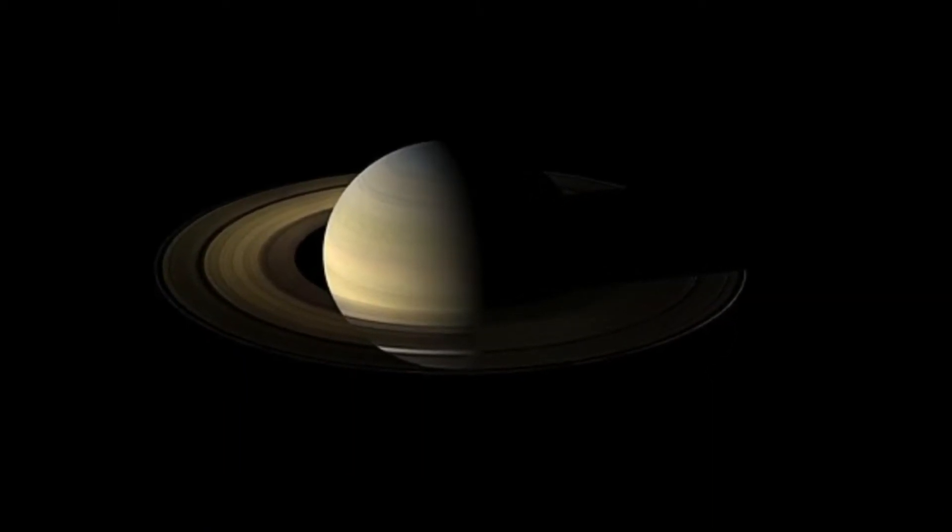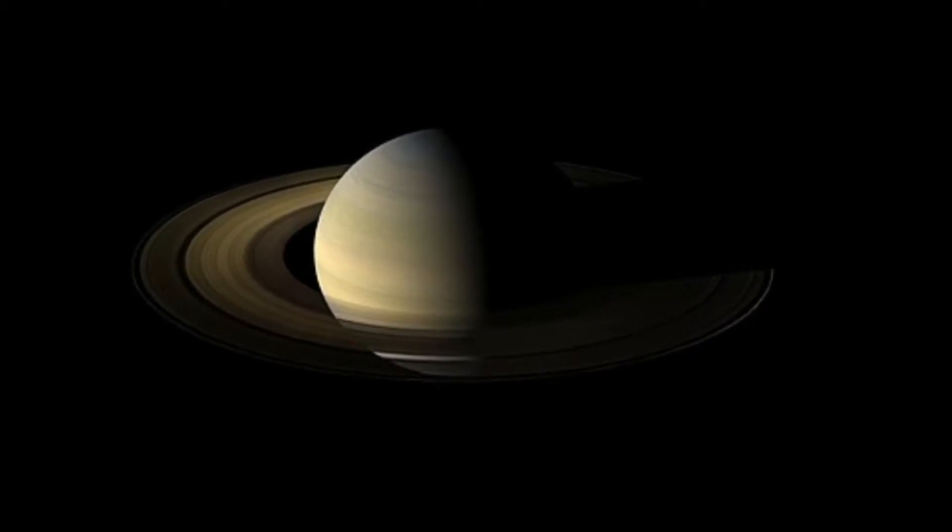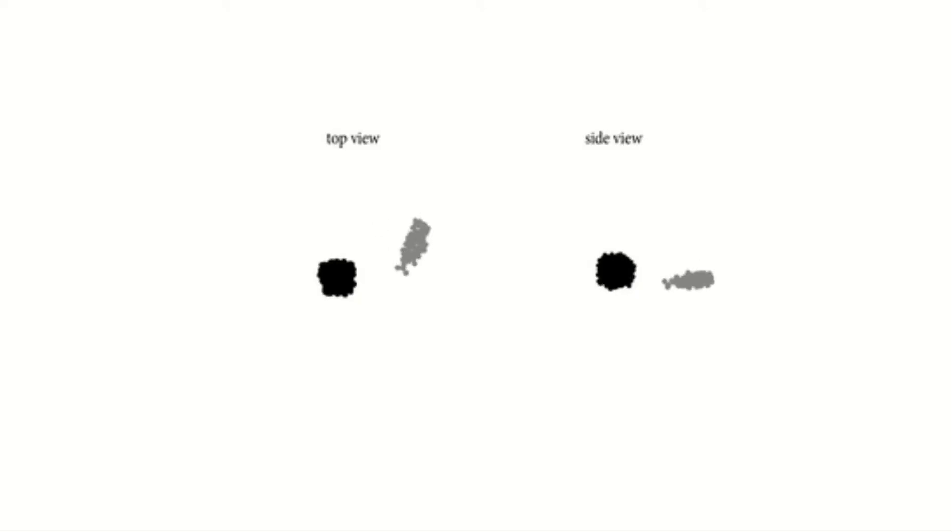Most of Saturn's rings lie within what's known as the Roche limit. It is the distance a satellite can orbit a large object without the planet's tidal force overpowering the object's own gravity and tearing it apart. Saturnian rings that lie outside the Roche limit stay together because of the gravitational influence of other satellites such as moons.